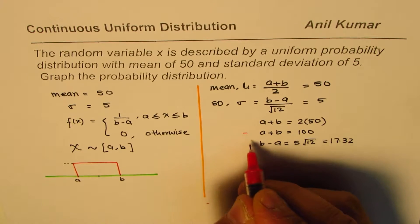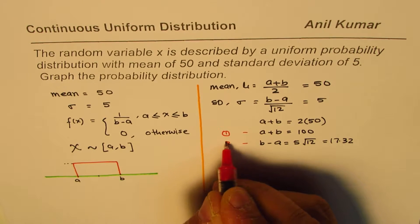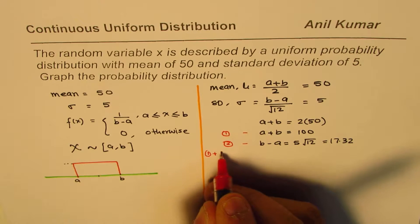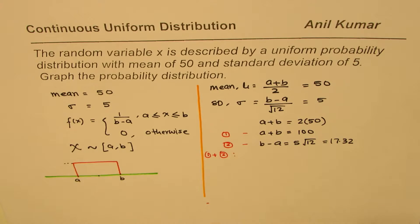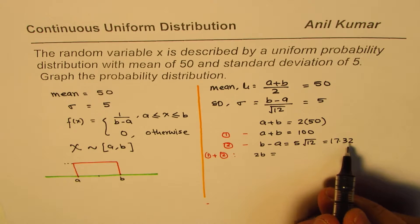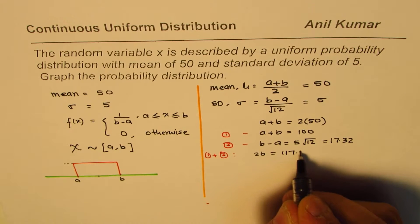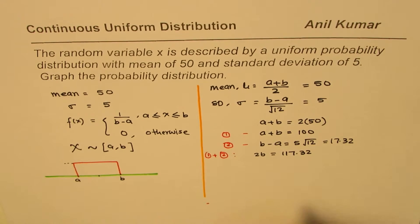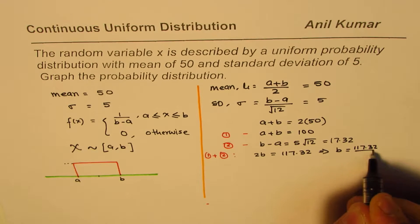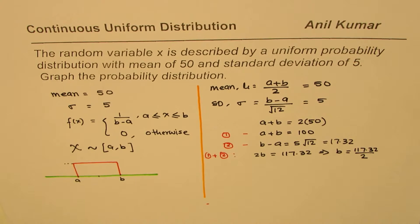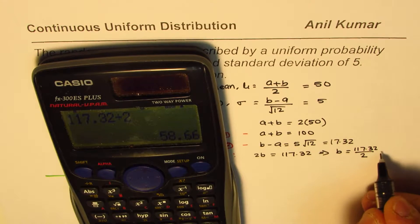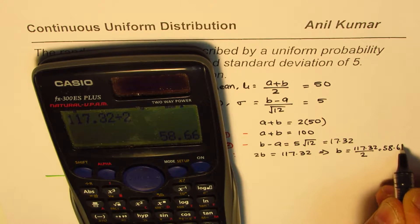Now, so we have these two equations, let's call them as 1 and 2. Two variables, so it's easy to calculate. If I add them up, equation 1 plus equation 2, then what do we get? If you add them up, a minus a cancels, we get 2b equals 100 plus 17.32. So we get 2b equals 117.32. Adding them up, so that gives us the value of b. So that is b equals 117.32 divided by 2, which is 58.66. So we have 58.66.